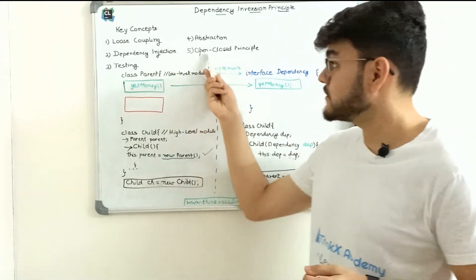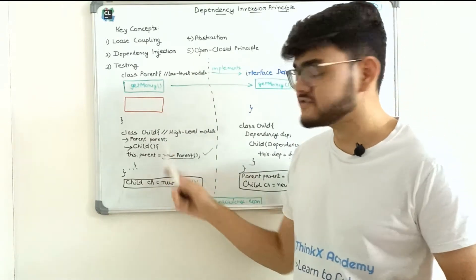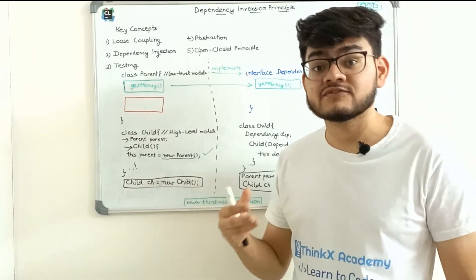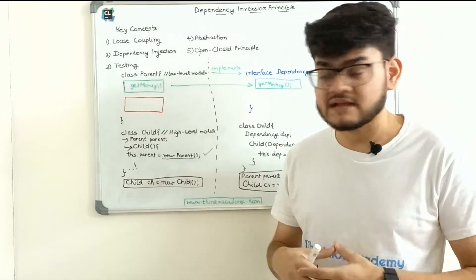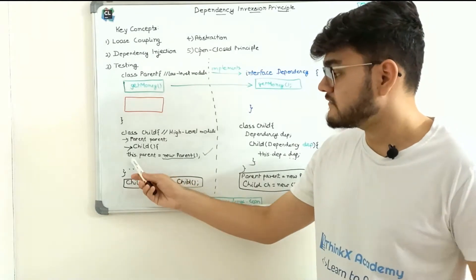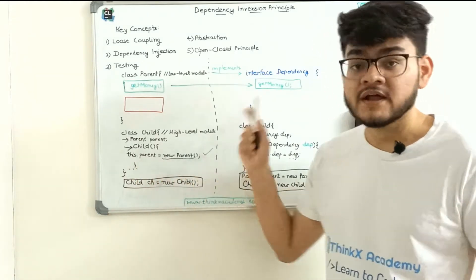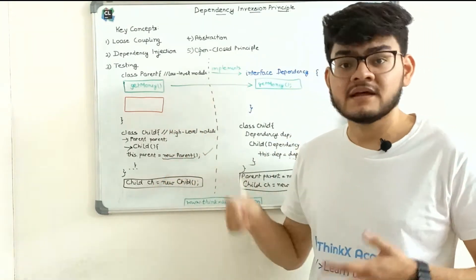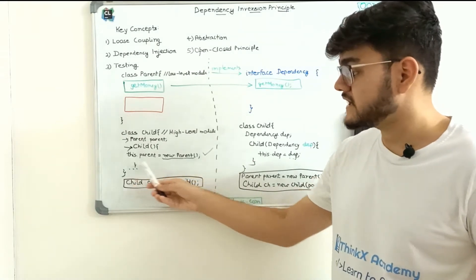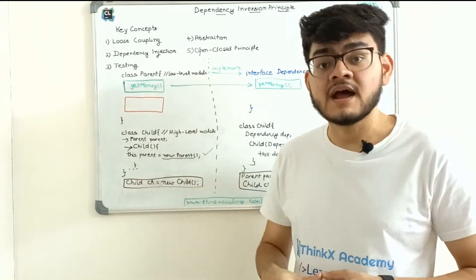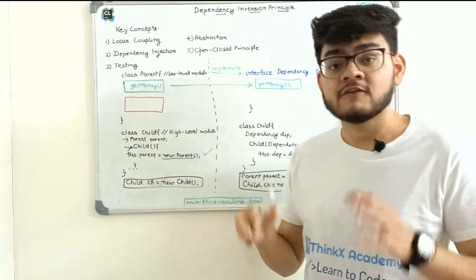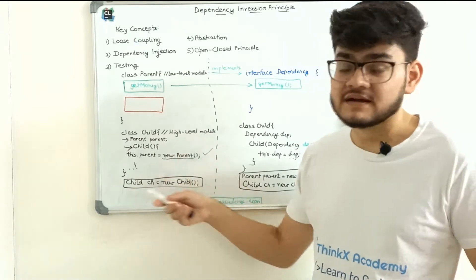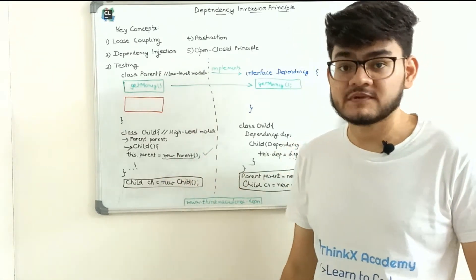The second problem is the open-close principle. If the child class depends on more than one dependency — for example, a teacher for education in addition to the parent — then I'll have to modify the class and write `this.teacher = new Teacher`. Similarly in the car-engine problem, if there are more dependencies, I have to modify the constructor again. This is a violation of the open-close principle, which says that once a class is created, it should be closed for modification.